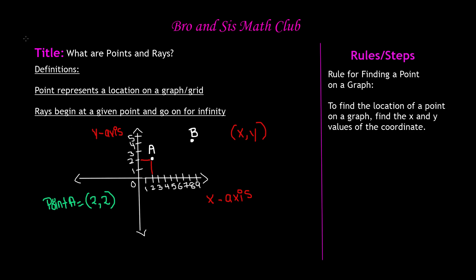Now let's go ahead and find the coordinates for point B. Same thing — first we need to find the x axis value. We know that it goes nine places to the right, and then it goes four places up, and it intersects at point B. So the coordinates for point B are going to be nine, comma, four. So we now know the location of points A and B: the coordinates are (2, 2) and (9, 4).